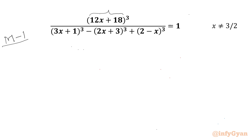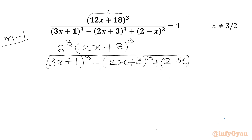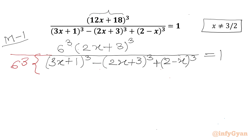From the numerator I will take 6 common, so we can write 6 cube as a multiplier. In the bracket: (2x+3) whole cube over (3x+1) whole cube, minus (2x+3) whole cube, plus (2-x) whole cube, equal to 1. Given that x cannot be equal to 3 over 2. Now I will divide both sides by 6 cube, which is 216.